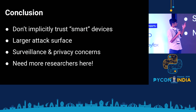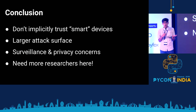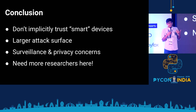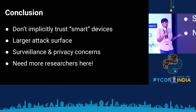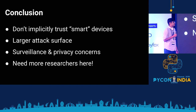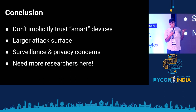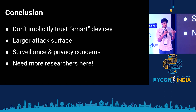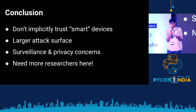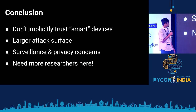Another issue is privacy concerns. Everyone voluntarily buys and installs wiretaps known as Google Home and Alexa. Amazon is basically using this as a way to collect your data — there's no better way to put it. And in totalitarian governments like China, these devices can be potentially used for surveillance campaigns. I'd like to call for more researchers in this space, because the entire IoT space is growing rapidly and no one's really taking a closer look at the actual security state it's in. We need more researchers here.